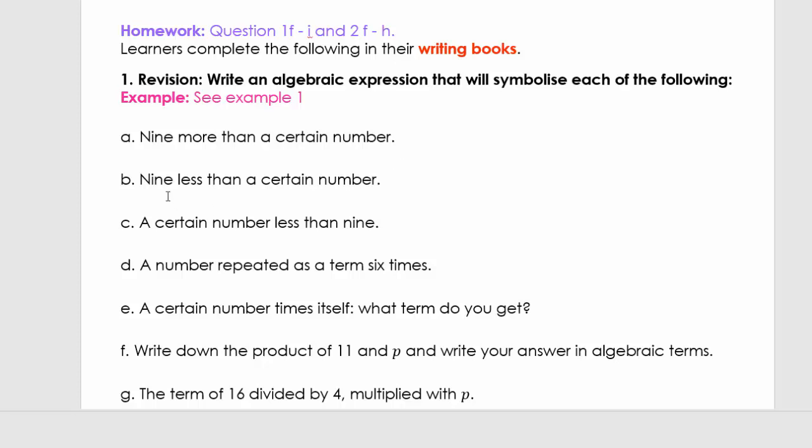The next one, 9 less than a certain number. So the certain number is x, or 9 less than a certain number. So we're going to say 9 minus x. C, a certain number less 9. So now what we have is x minus 9.